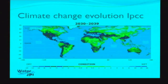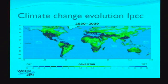Looking ahead 20 to 30 years, in terms of climate change and rainfall evolution, there will be a large decrease of rain around the Mediterranean, around the south of Florida, Texas, and going up to China.